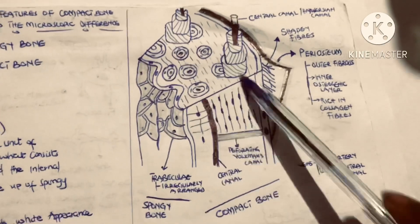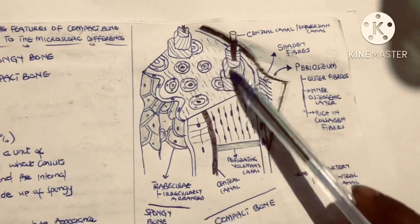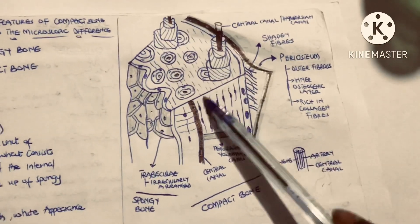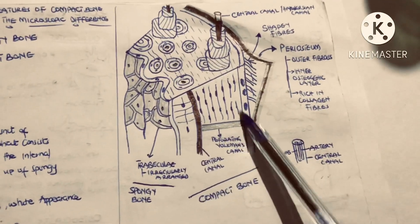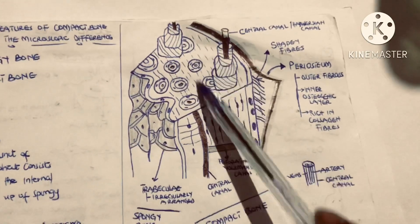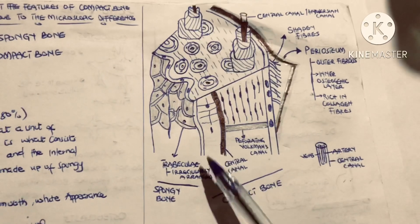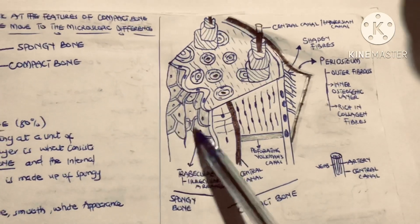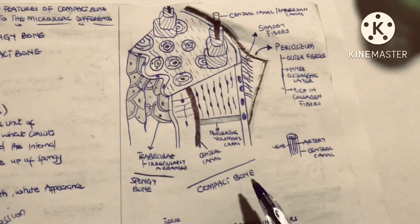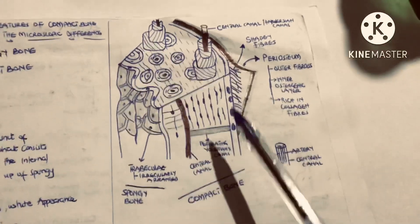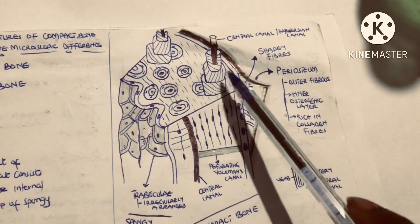This is the microscopic structure of the bone. The whole of this region represents the compact bone, and from here to here represents the spongy bone. Now let's look at the compact bone.